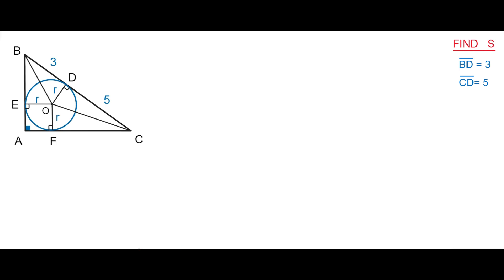Considering the right triangles BOE and BOD, we can easily make sure that these two right triangles are congruent, because they have a common hypotenuse and the corresponding legs are congruent. This is one of the rules of right triangle congruence.